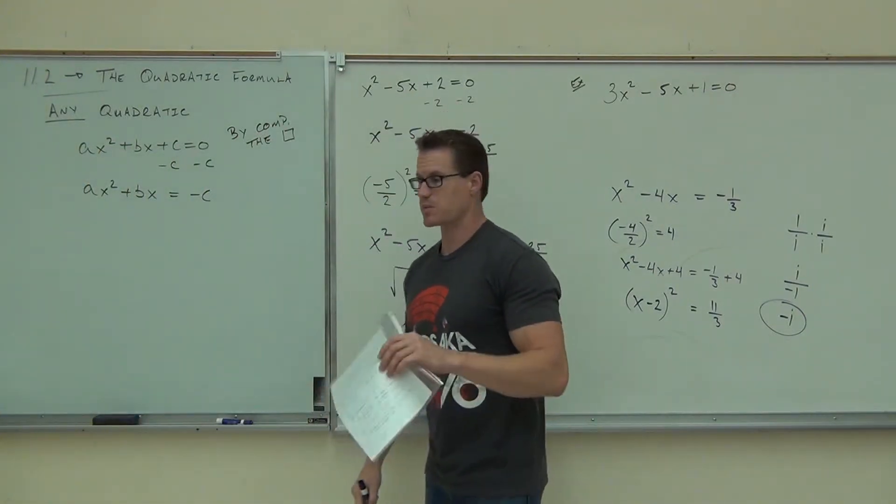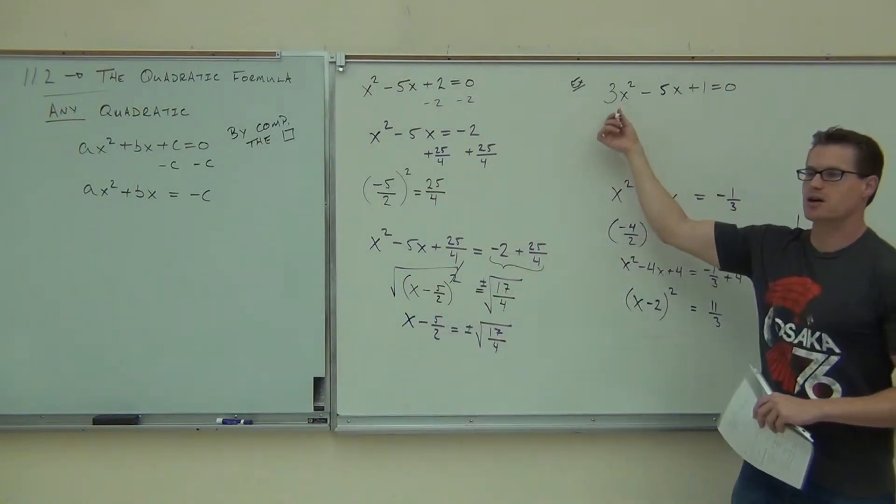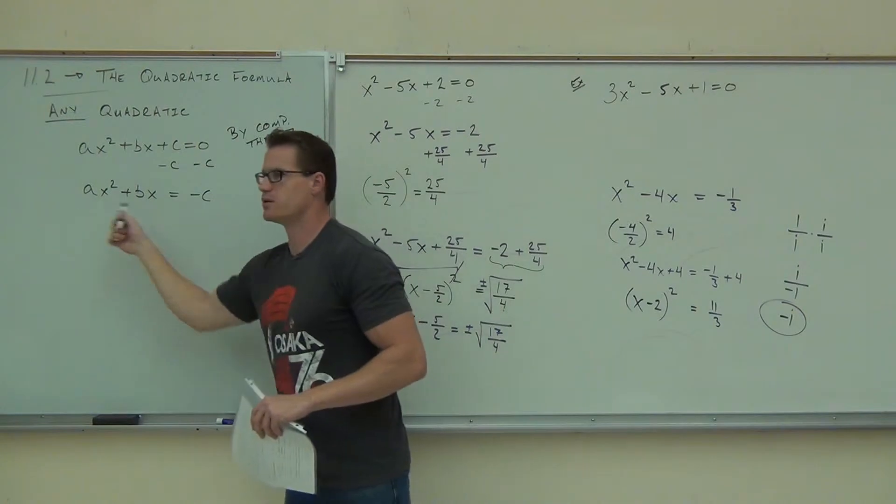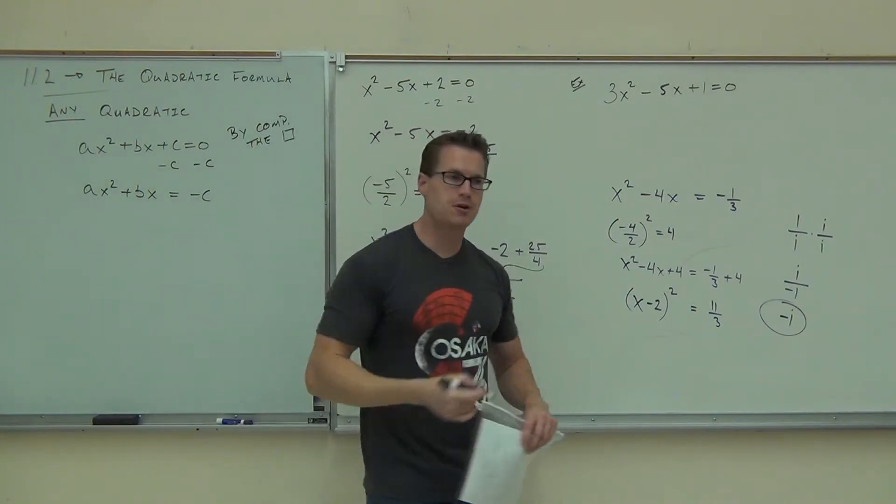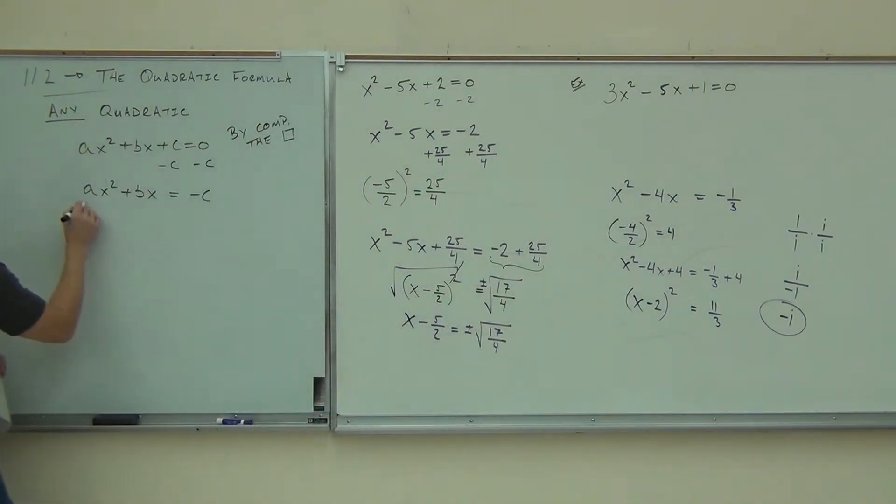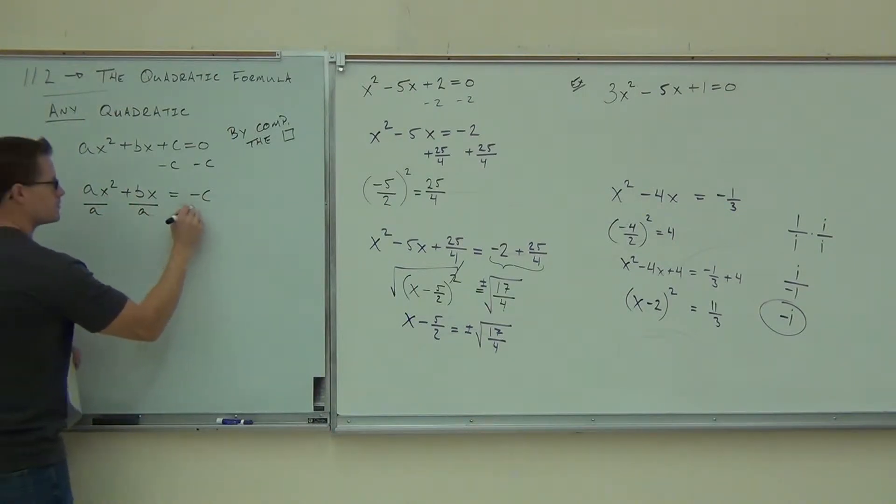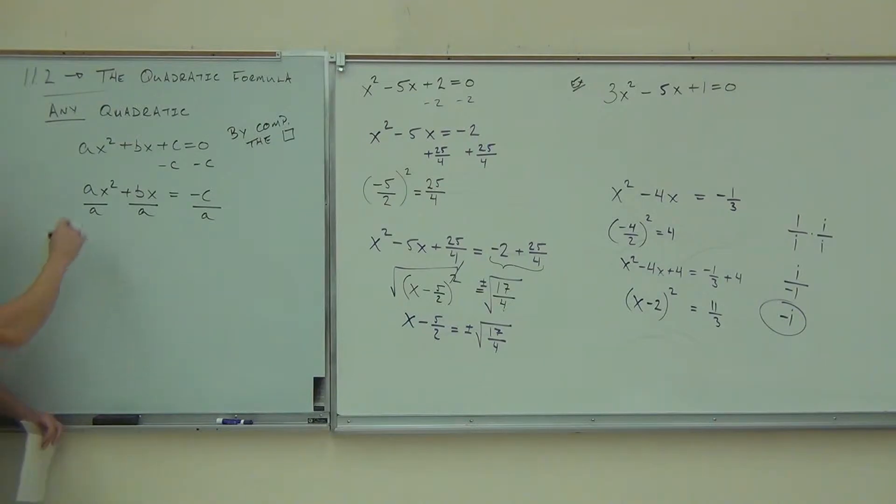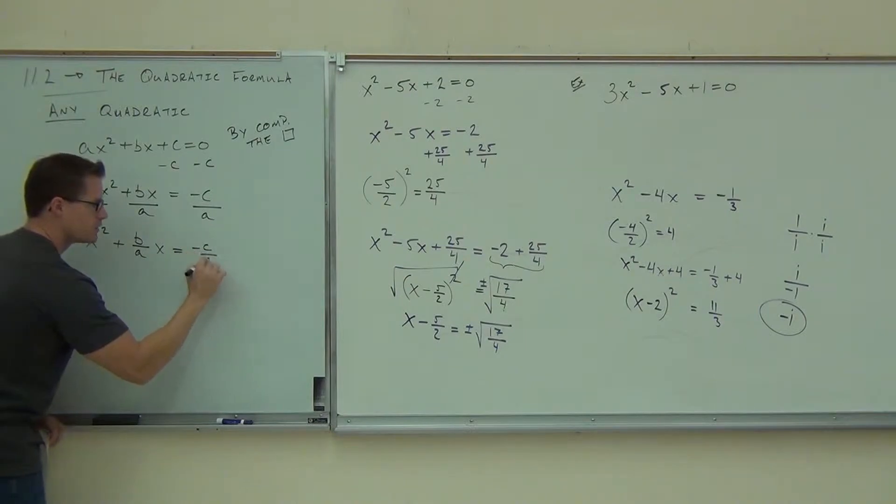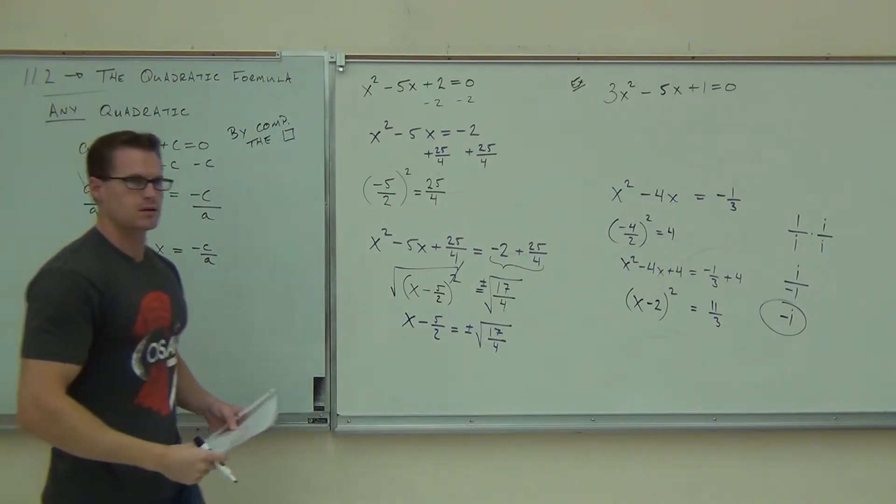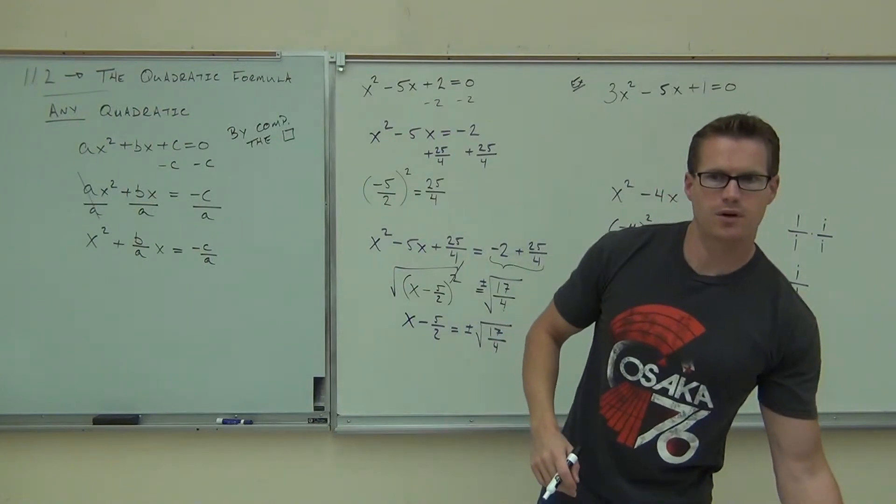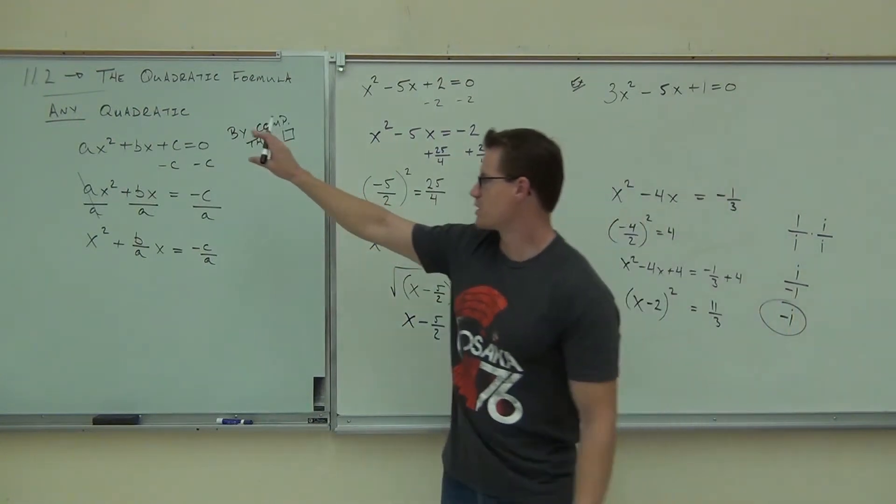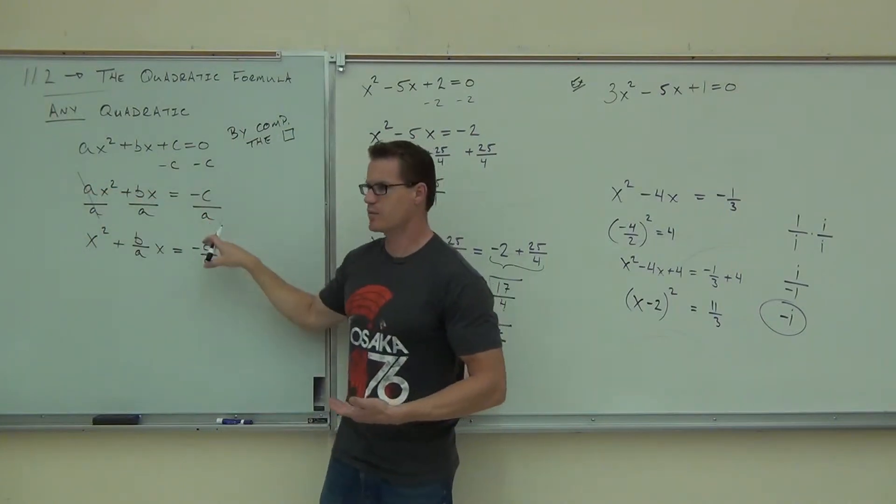The next step, step number two, said you need to somehow get rid of that coefficient. What's the coefficient I need to get rid of here? a. So I'm going to divide everything by a. What happens is I'm going to get x squared plus b over ax equals negative c over a. Are you still okay so far?